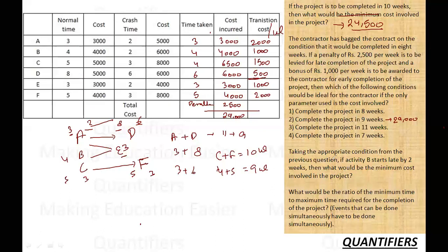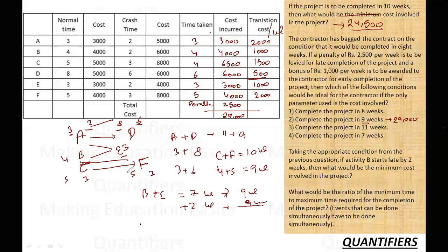Question 3: Taking the 9-week condition from the previous question, if activity B starts late by 2 weeks, what is the minimum cost? B starting late means B and E both shift 2 weeks forward, but since only E depends on B, no other activity is affected. B and E will still complete within the 9-week window. So the cost remains the same: 29,000 rupees.